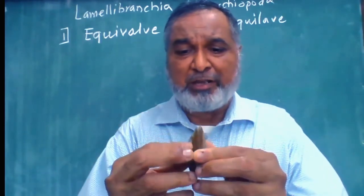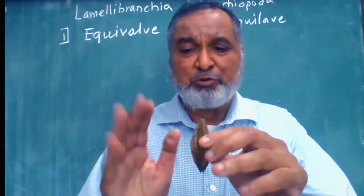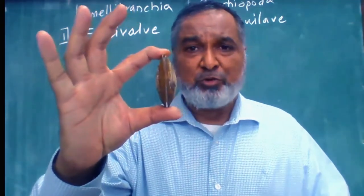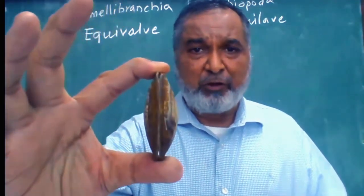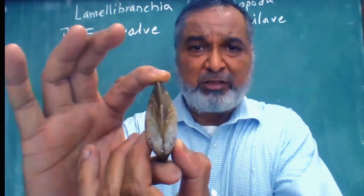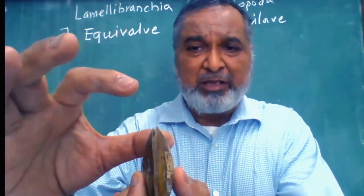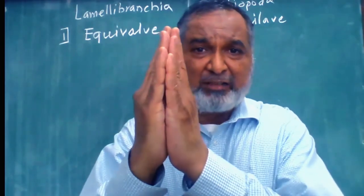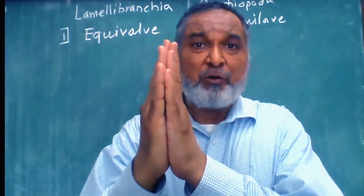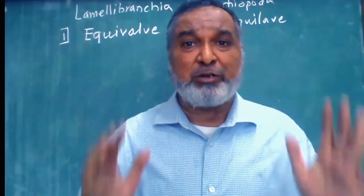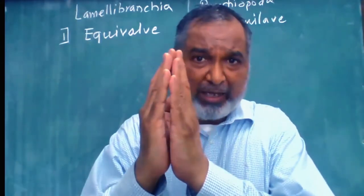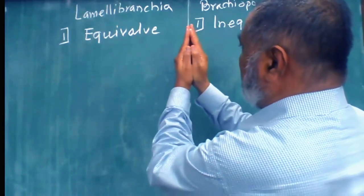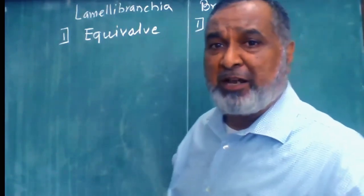For example, I brought the pecten shell here. This shell has a left valve and right valve. If you join them exactly, it joins just like two hands joined together — you can see from the front side as well as the back side, it exactly matches. So hands are the best example for lamellibranch equivalve. If you know this, you can clearly understand and draw the diagram of the lamellibranch.